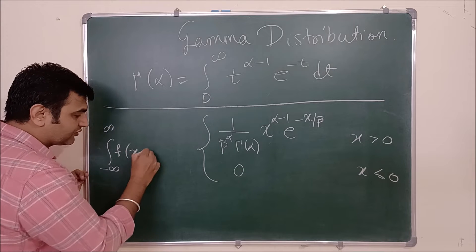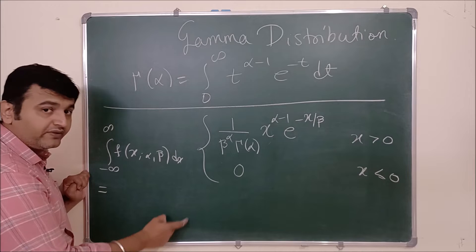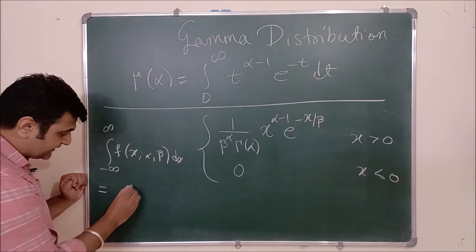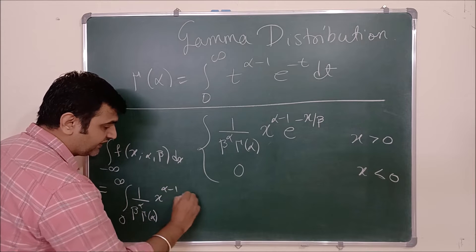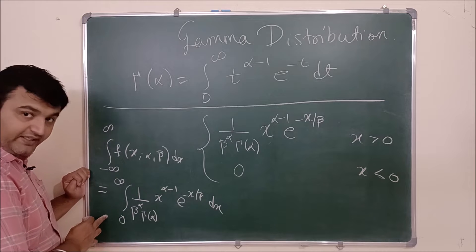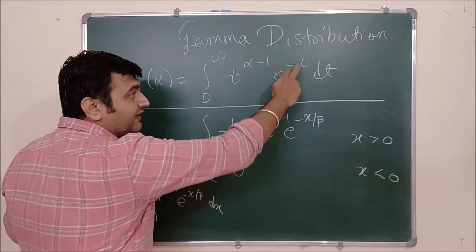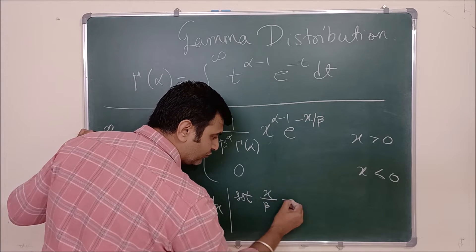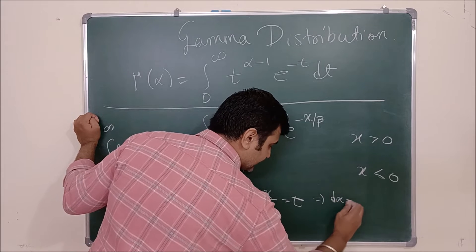We check whether ∫_{−∞}^{∞} f(x; α, β) dx = 1. Splitting the integral, the part from −∞ to 0 is zero since f(x) = 0 there. So we need: ∫₀^∞ (1 / β^α · Γ(α)) · x^(α−1) · e^(−x/β) dx = 1. To use the gamma function definition, we substitute x/β = t, so that e^(−x/β) becomes e^(−t).